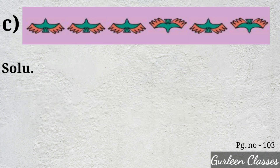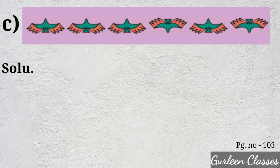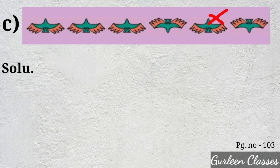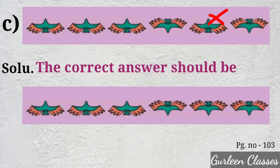Part C. Here you can see pictures of birds. Three times birds are facing upwards, and then it should be downwards. So the correct answer should be three times downwards.